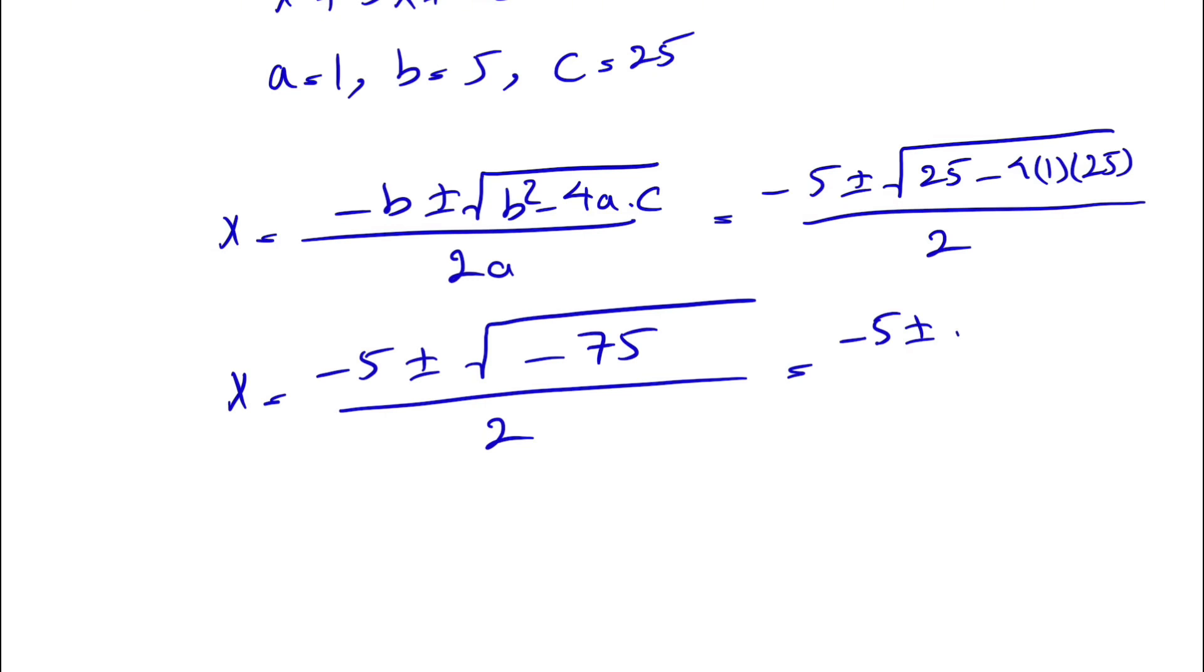Our discriminant is negative, which means we have complex answers. So minus 5 plus or minus the square root of 75. We can do 25 times 3, and minus 1 would be i squared, or our imaginary number, divided by 2.